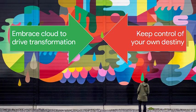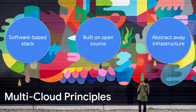Organizations want to drive their transformations, but they want to keep absolute control over what they are using and the consequences of that. Looking at Google's multi-cloud principles: organizations will continue to use one or more cloud providers, but three key things matter — the stack you choose should be software-based, based on open source, and there needs to be a way to abstract out the infrastructure and reduce dependence on it.